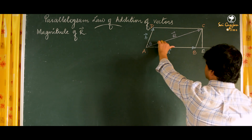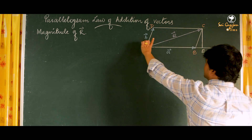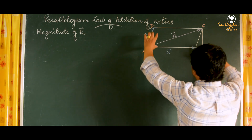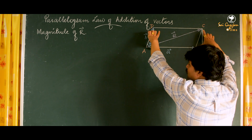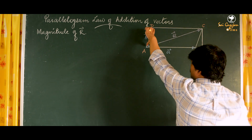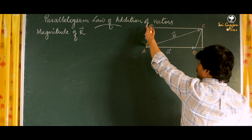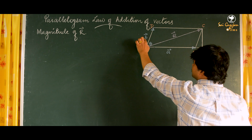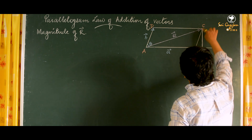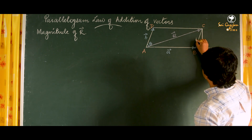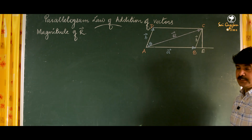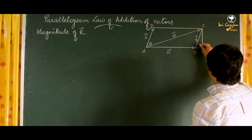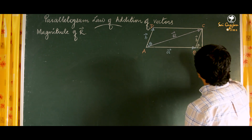The direction of a is along AB and the direction of b is along AD. In a parallelogram, opposite sides are equal and parallel, so BC also represents vector b. Vector b is in the direction of BC and vector a is along AB, which is why the angle at B between them is theta.